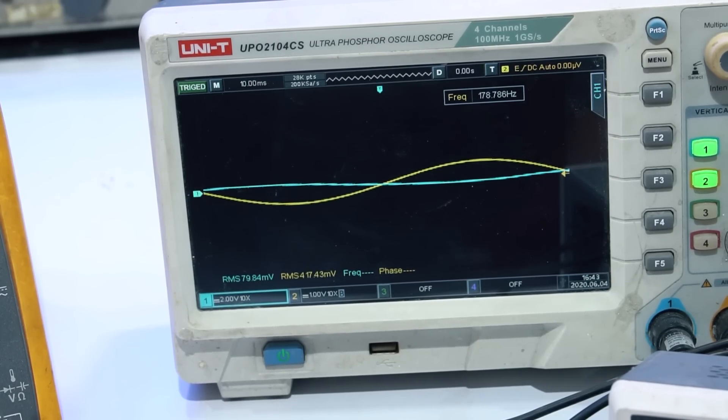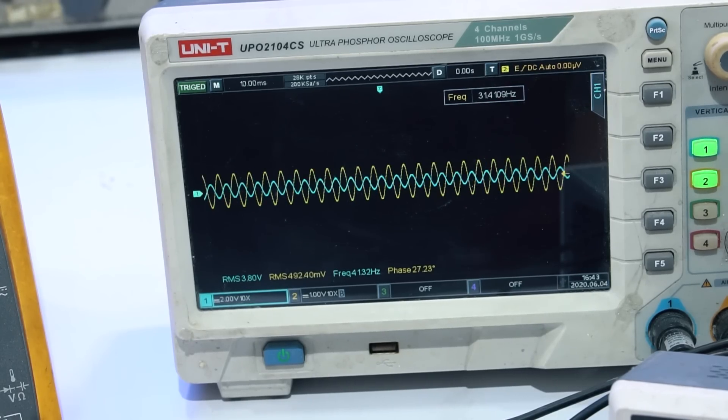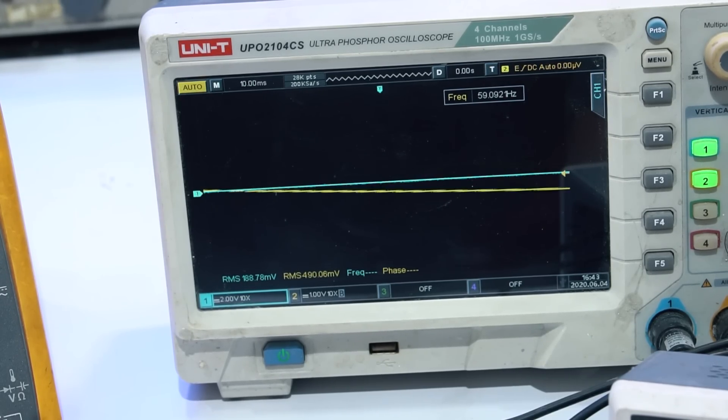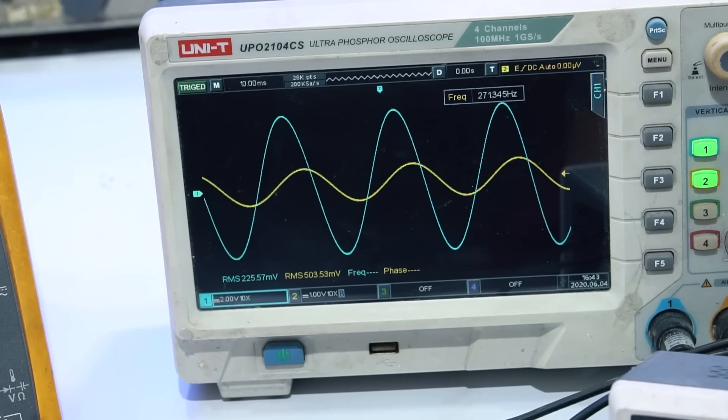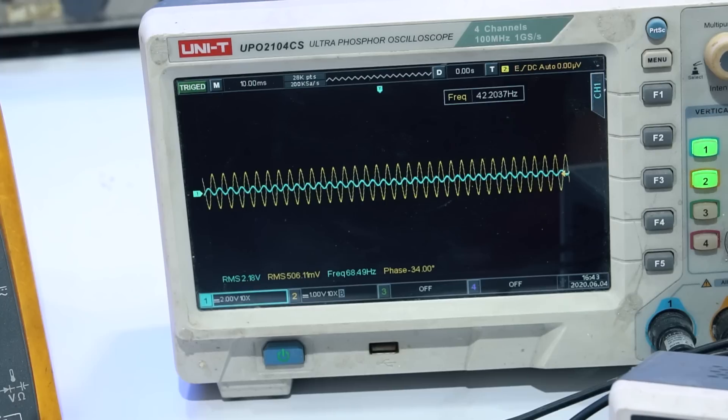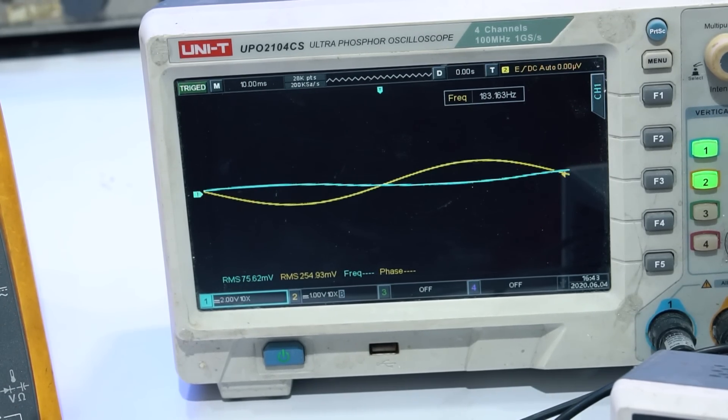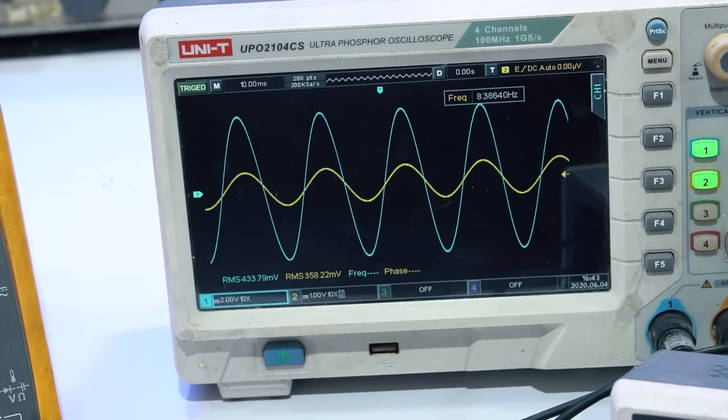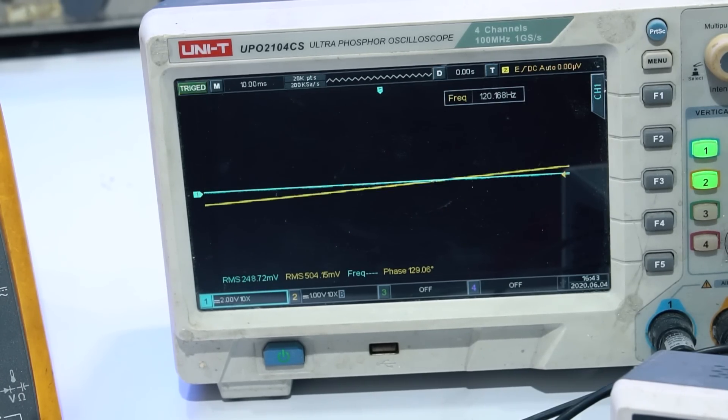In the next video, I will combine this subwoofer control kit with TDA7294 amplifier to drive a dual-coil subwoofer speaker. Each coil will be controlled or driven with one channel of TDA7294 BTL amplifier.